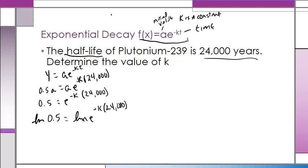Well, the LN and the E is going to cancel. It's going to leave us now with LN 0.5 equals negative k times 24,000.